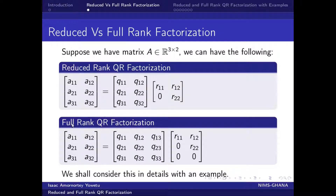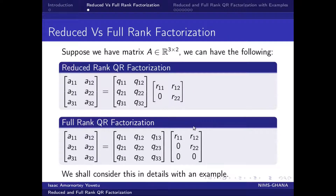With the same matrix A that we have here, which is 3 by 2, we can decompose it into a 3 by 3 Q matrix and our R to be 3 by 2 — the same R matrix that we have here, with zeros beneath it. So we shall therefore consider this in detail with an example.